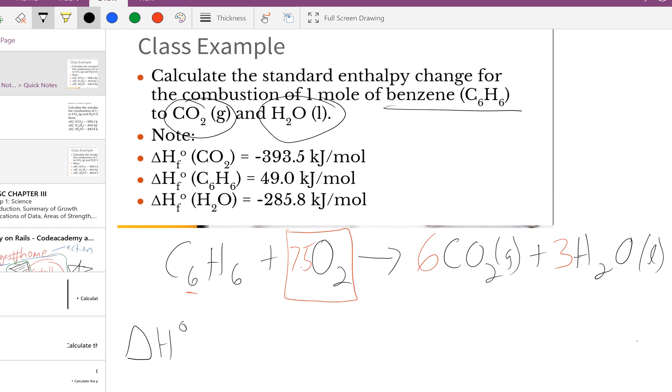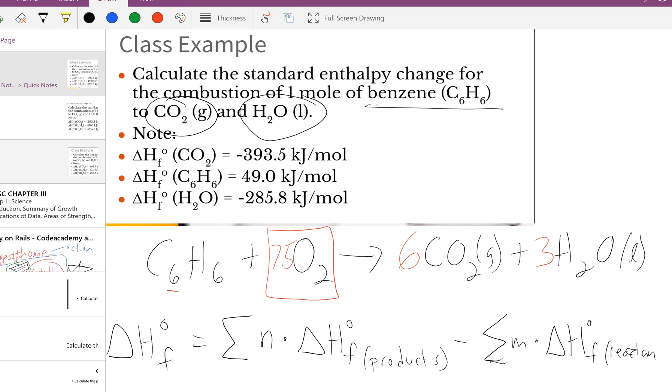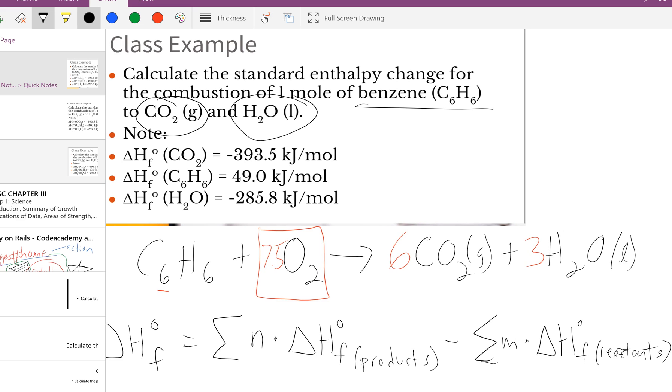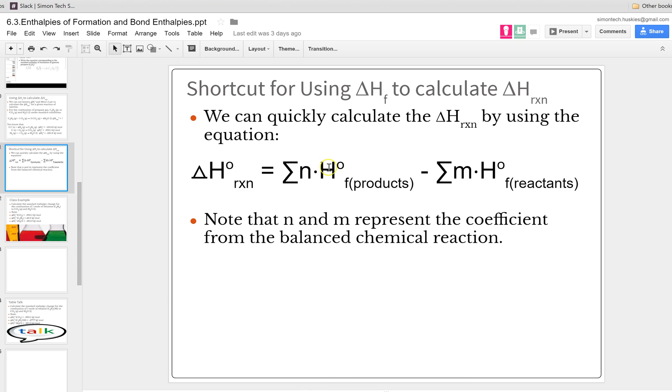All we need to do to find the standard enthalpy formation of benzene is sum the coefficients times the delta H standard formation of the products minus the sum of the coefficients times the standard enthalpy change formation for the reactants.